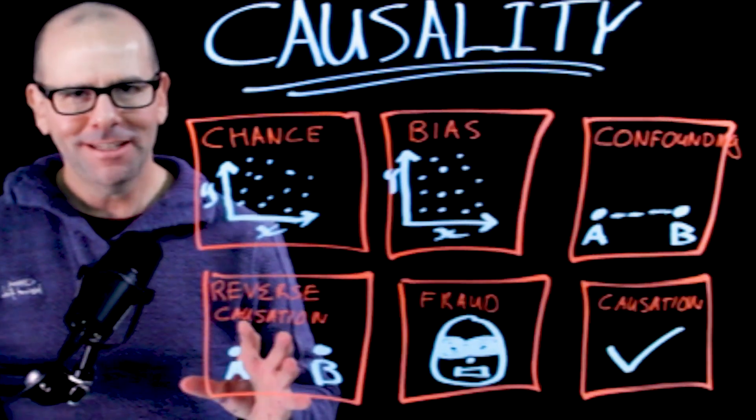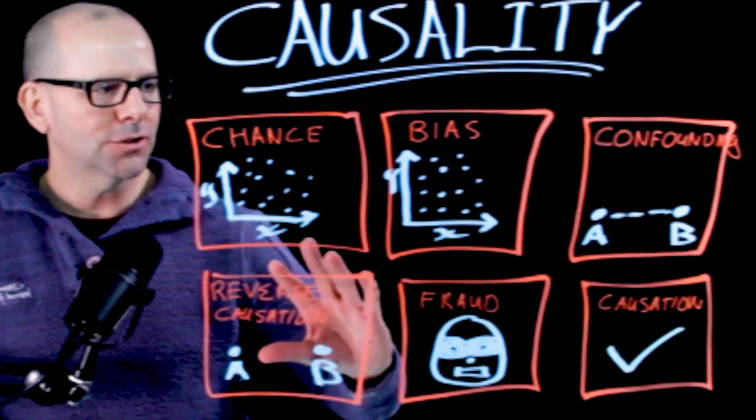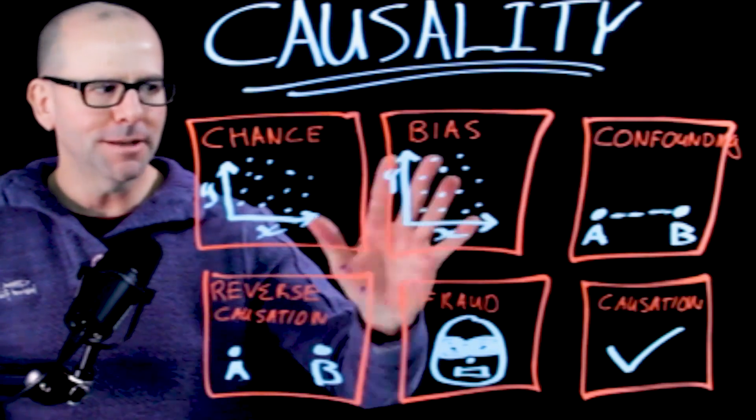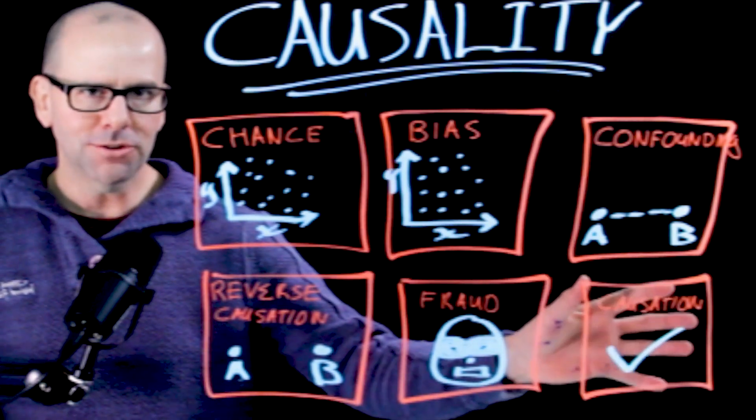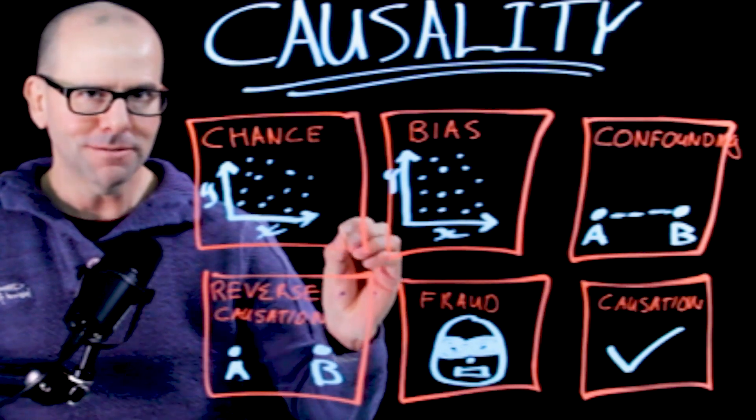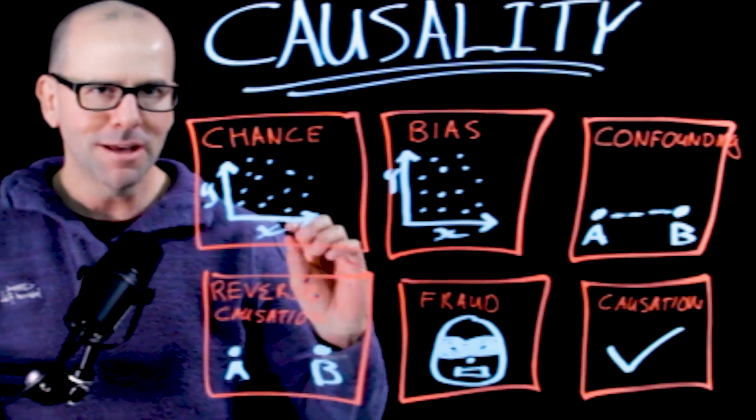So let's go through these quickly. And the idea is that if you can exclude these other possible explanations, you can conclude that the relationship is likely due to causation, or at least you've strengthened that argument. Okay, you got it? So let's go through them one at a time, very briefly.